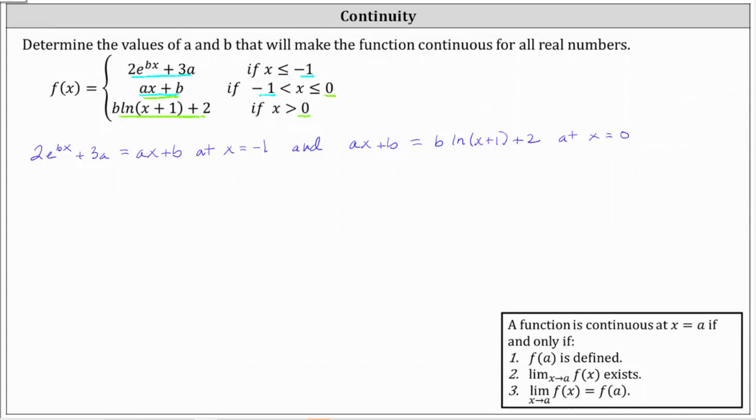So let's begin with this first condition and substitute negative one for x. This gives us two times e to the power of b times negative one plus three a equals a times negative one plus b. And now let's simplify. We have two e to the power of negative b plus three a equals negative a plus b. Let's combine the a terms by adding a to both sides of the equation. Simplifying, we have two times e to the power of negative b plus four a equals b. Notice this equation contains two unknowns, so we'll have to stop here and hopefully get some more information from the second equation.